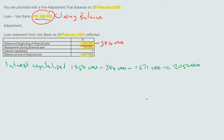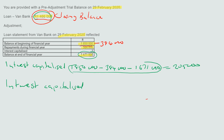The simpler method: interest capitalized equals the closing balance per the loan statement — one million six hundred and seventy-one thousand — minus the closing balance in your trial balance — one million four hundred and sixty-six thousand. This gives the same result: two hundred and five thousand. That is how you calculate the interest capitalized.